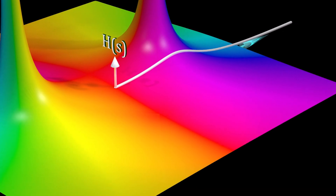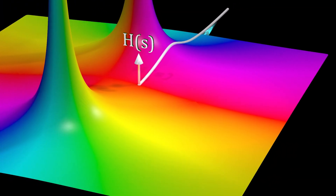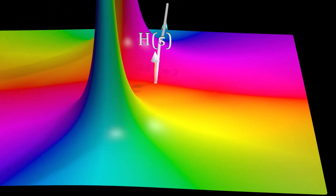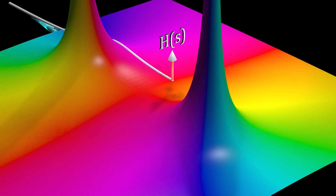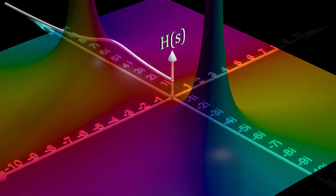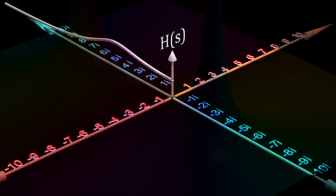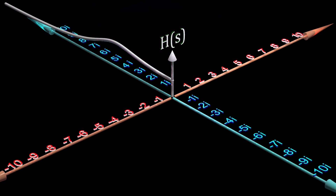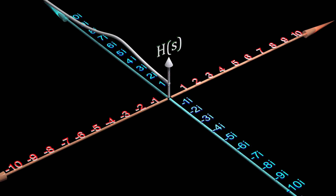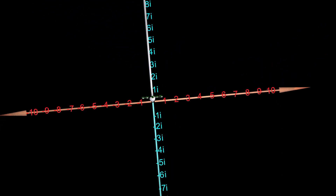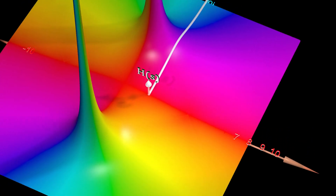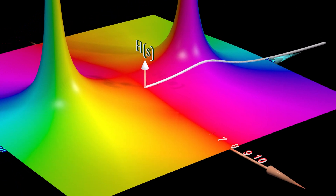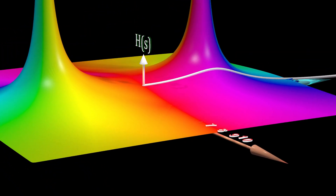The input to the transfer function is the variable S. S is a complex number with the real and imaginary components along these two axes. The output of the transfer function is also a complex number, with a magnitude given by the height of this graph.